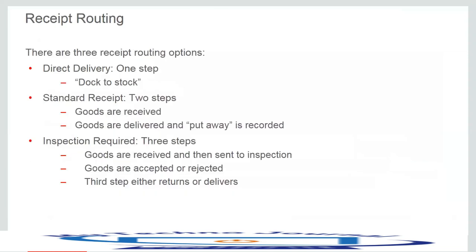There are three receipt routing options available. The first is direct delivery, which is a one-step process — the goods are received and delivered in one step. The second is standard receipt, which is a two-step process: in the first step the goods are received, and in the second step a put away transaction is performed.